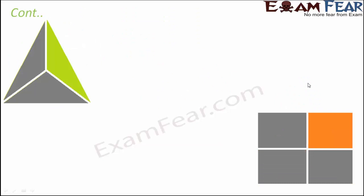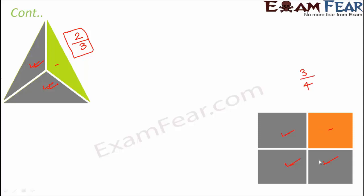Now let us look at similar figures in a slightly different way - the shaded portion has changed. The triangle is divided into three equal parts and two parts are shaded, so two thirds of the triangle is shaded. This rectangle has four equal parts and three are shaded, so three fourths of the rectangle is shaded.